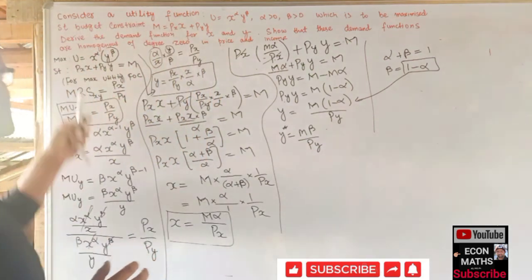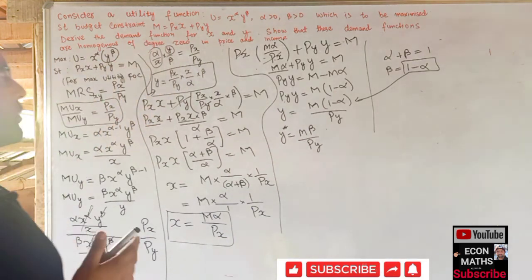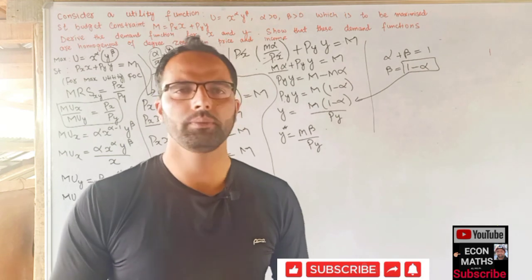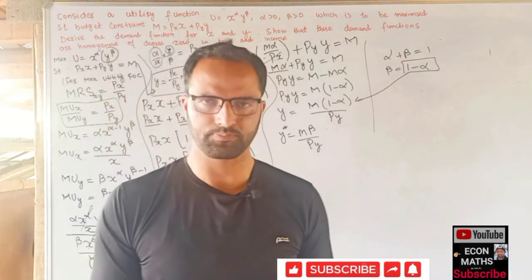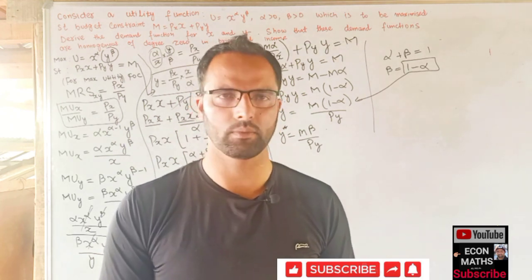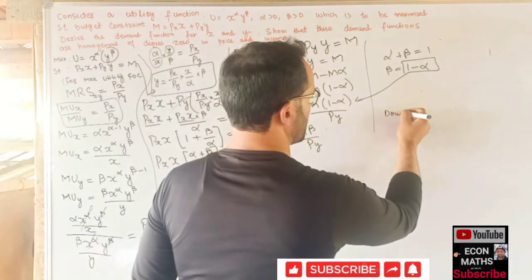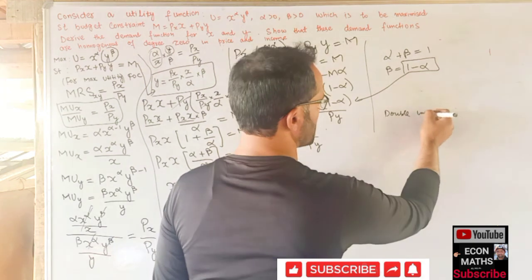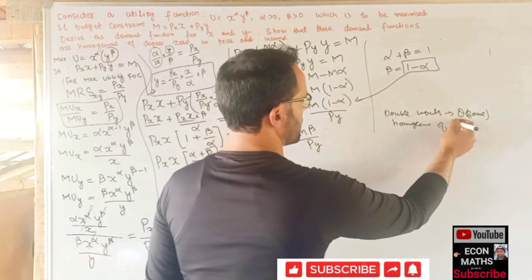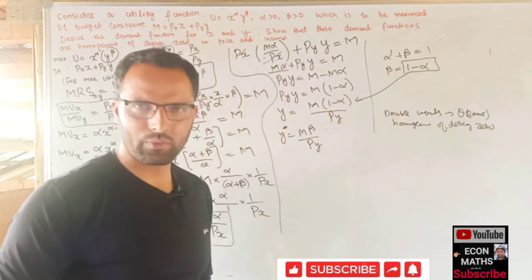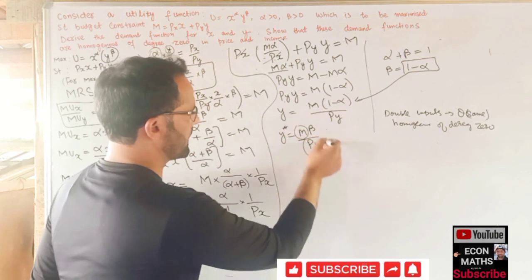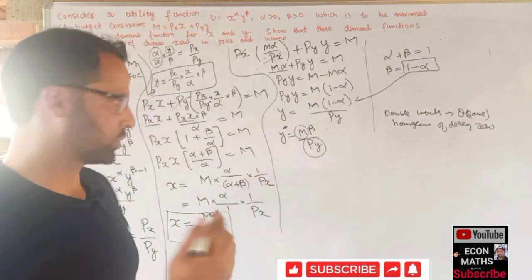Now for the second part: showing these demand functions are homogeneous of degree zero in prices and income. Homogeneous of degree zero means if we double both the inputs — in this context income and prices — the quantity demanded remains the same.